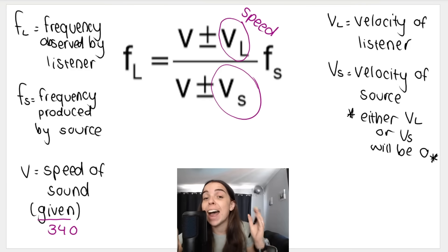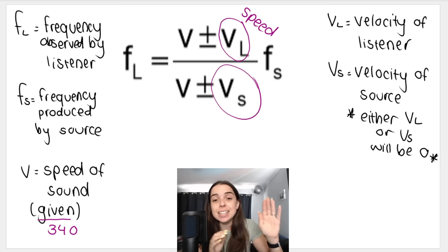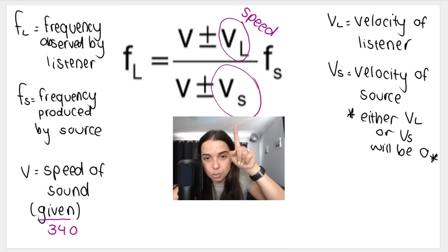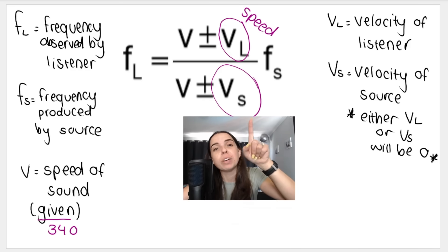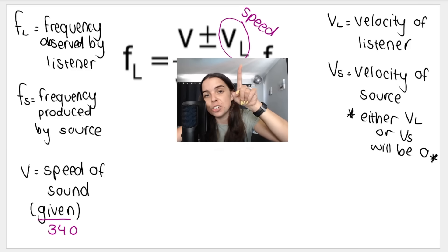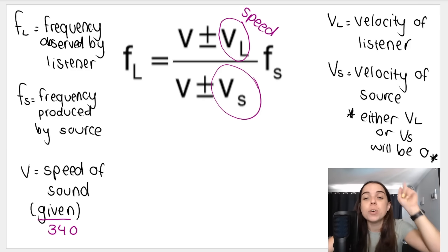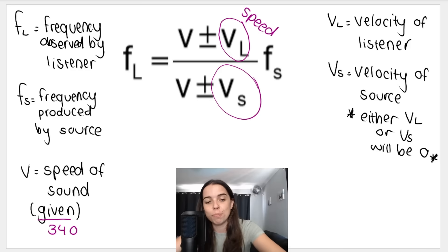When doing questions, either the listener or the source will be stationary. If the listener is moving, then VS will be zero. If the source is moving — like an ambulance — then the listener will be stationary, so VL will be zero. Either VL or VS will be zero.